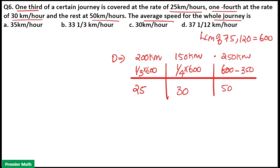Distance is 200, 150 and 250, that means time taken is 200 by 25 is equal to 8 hours and 150 by 30 is equal to 5 hours and 250 by 50 is equal to 5 hours.